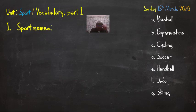ننتبه هنا إلى ING في آخر الكلمة - notice the ING at the end of the word. Some students make the mistake and pronounce the G. The correct pronunciation is 'skiing' - NG, not G. We say skiing. Very good. Let's move on to discover the meaning of the following words and then move on to another group of sports.